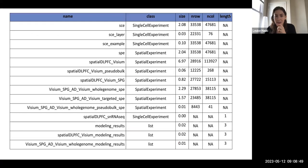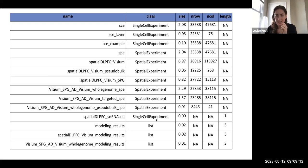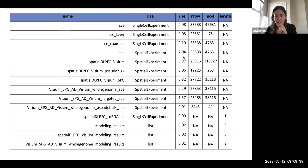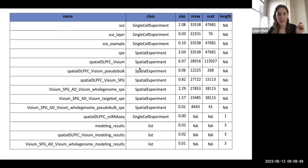Here's a summary of the data available via the fetch_data function out of spatialLIBD. We have SCE objects — I believe from the spatial DLPFC single-nucleus data — and SPE objects including the original 12-sample layered spatial experiment and the 30-sample Visium DLPFC dataset from the new project. Note that spatial experiments can be really large — the Visium DLPFC one is almost 7 gigabytes. The reason it's bigger than even the single-cell experiment is that these objects contain really high-def images, which are an important part of analyzing and understanding the data.